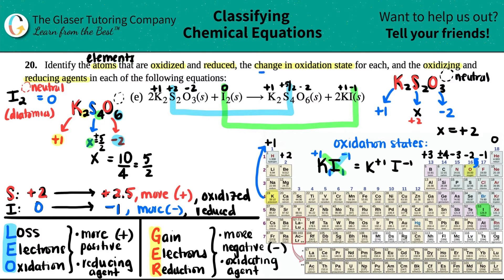Now for the change in oxidation state: sulfur changed from +2 to +2.5, losing on average half an electron. Iodine changed from 0 to -1, gaining one electron and becoming more negative. Those changes are what the question is asking for.